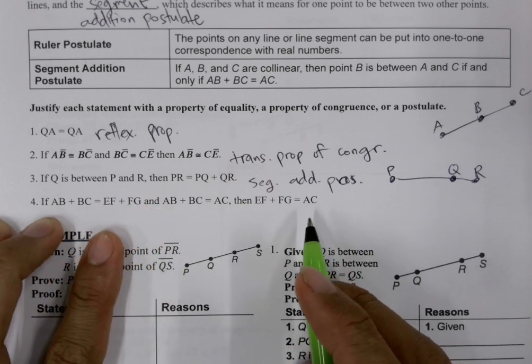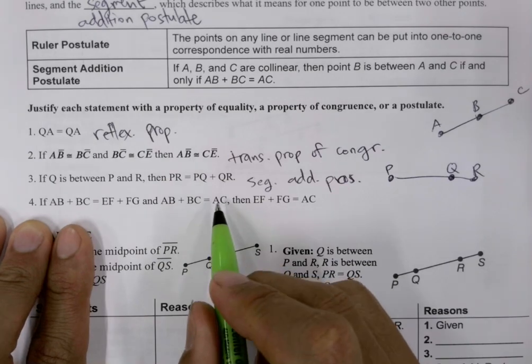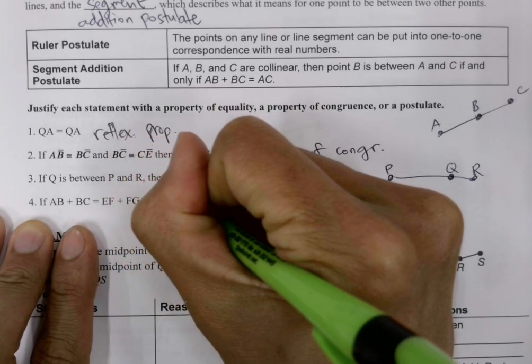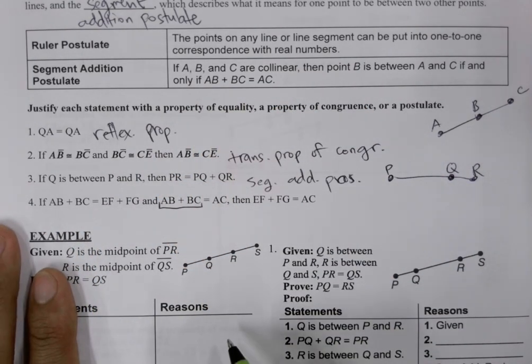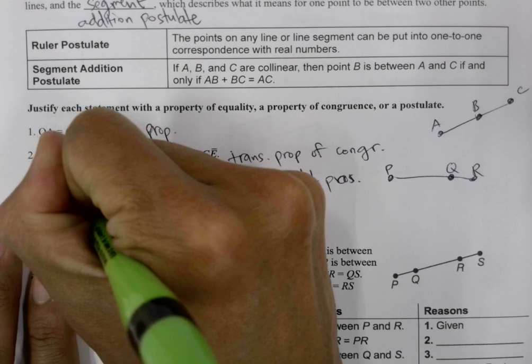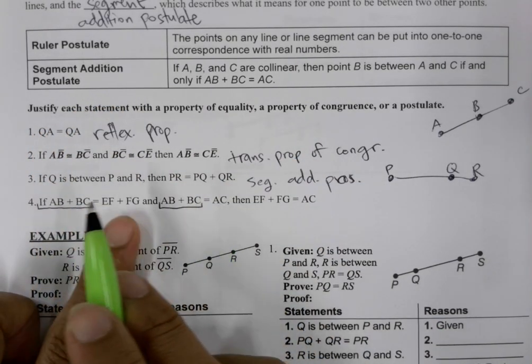So, what lets us say this? Well, notice here, this might be confusing, but we have here that AC is equal to this expression. And what we're doing over here is we're coming here and we're taking that same expression and we are replacing it with AC.